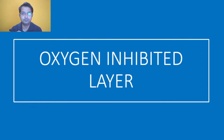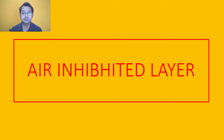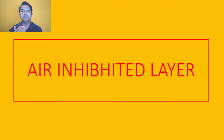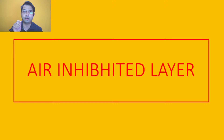That property is called the oxygen inhibited layer, also called the air inhibited layer. This is really important because without it, you would never be able to do incremental layering in light-cure composite. Even in chemical-cure composite, one of its noted disadvantages is that during mixing, oxygen can get entrapped in the mix and inhibit composite curing. As a student, I never really understood what that inhibition meant.